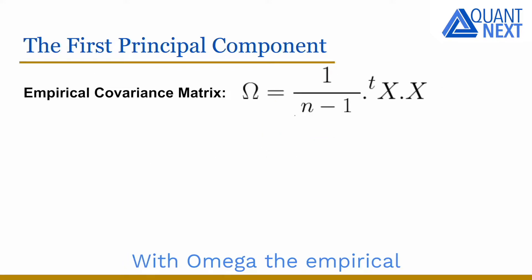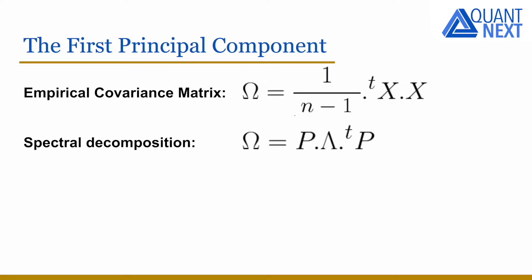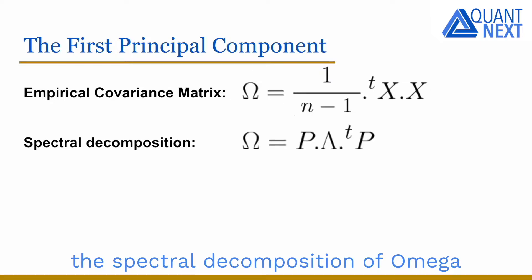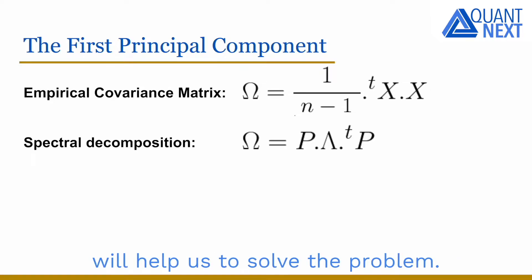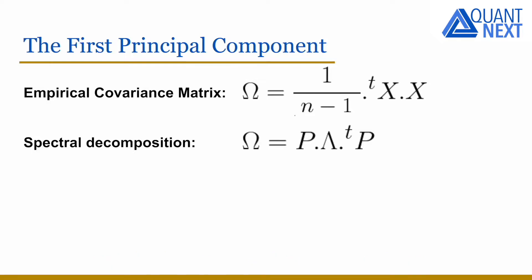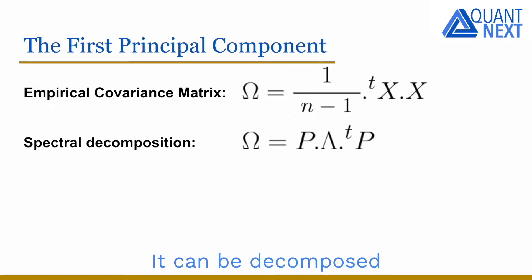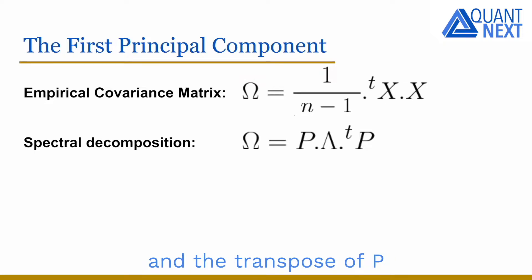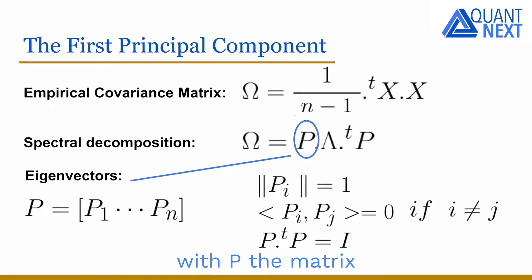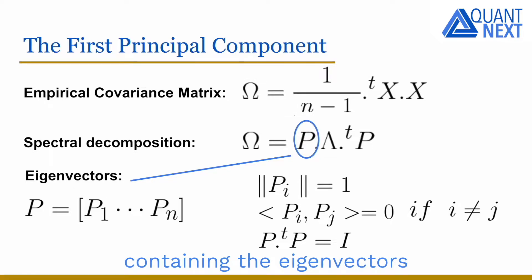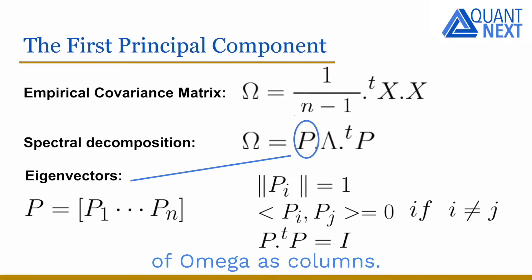With omega the empirical covariance matrix, the spectral decomposition of omega will help us to solve the problem. The covariance matrix omega is symmetric. It can be decomposed as a product of P, lambda, and the transpose of P, with P the matrix containing the eigenvectors of omega as columns.